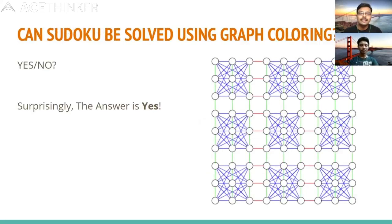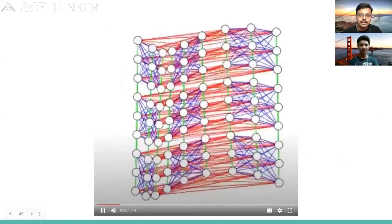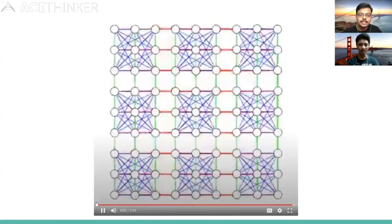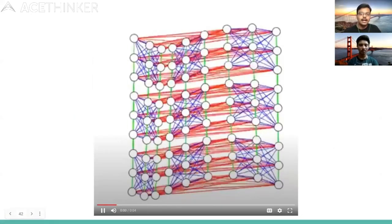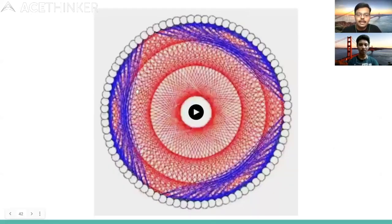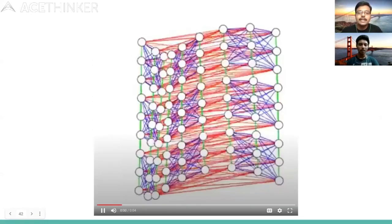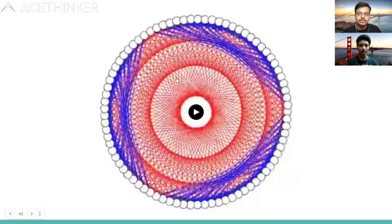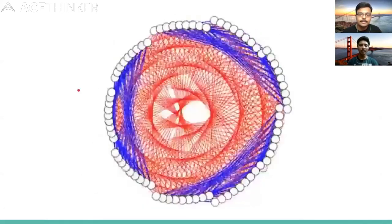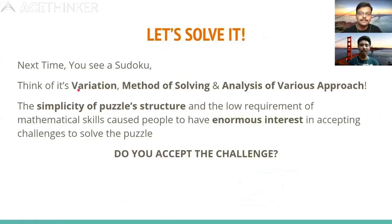A question for the audience: can Sudoku be solved using graph coloring? Surprisingly, yes! We can assign colors to graph elements and derive an algorithm to solve Sudoku using graph coloring. It results in a 9-chromatic graph with 9 colors representing numbers 1 to 9 — an interesting method for the audience to explore.